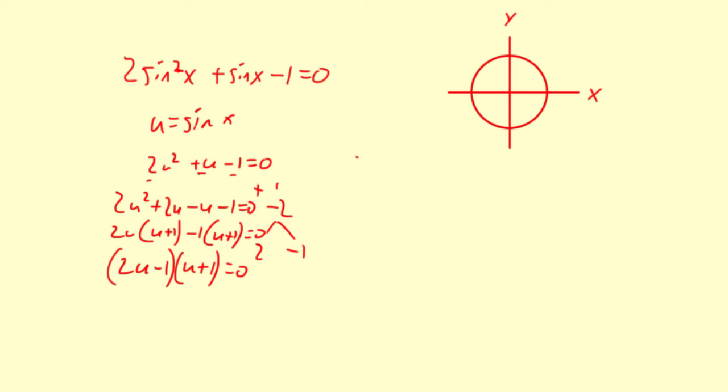Now I'm going to fix the u substitution. So it's going to be 2 sine x minus 1 times sine x plus 1 equals 0. Then we're going to use the 0 product property to solve each one.